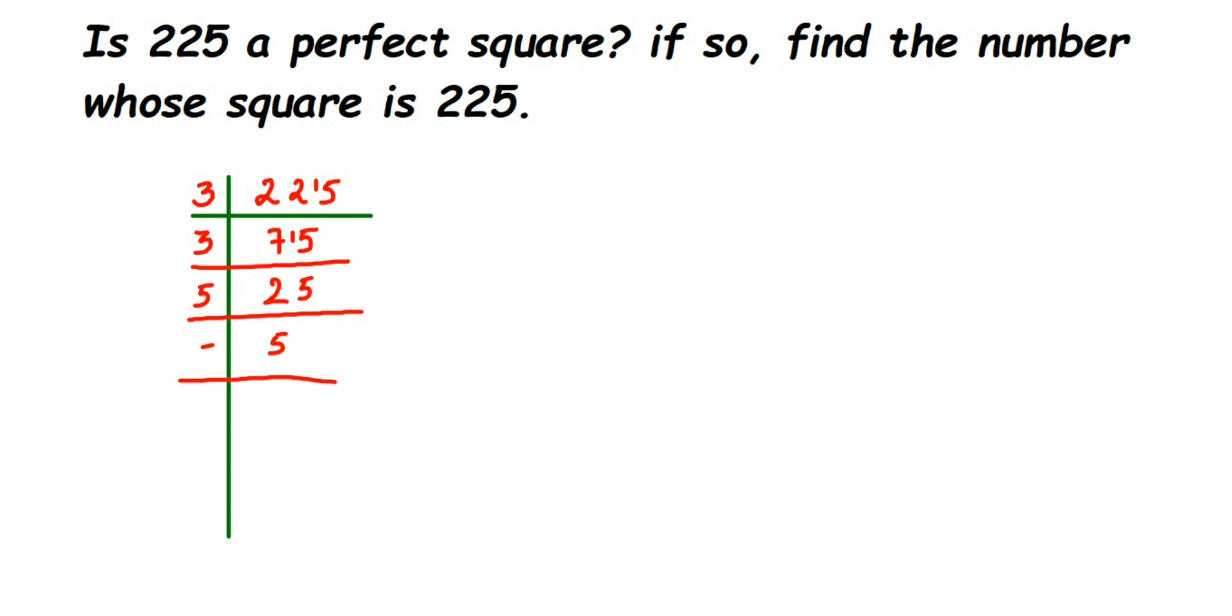Now once we have prime factorized, we're going to rewrite all these factors. So 225 is equal to 3×3×5×5.